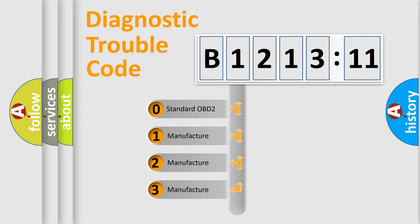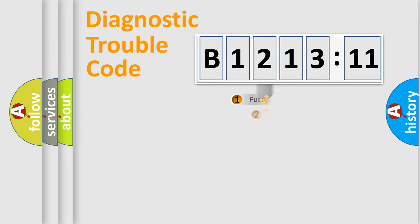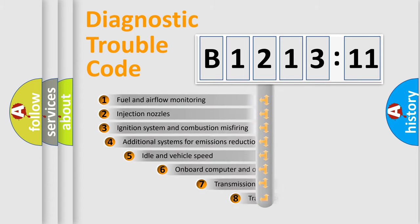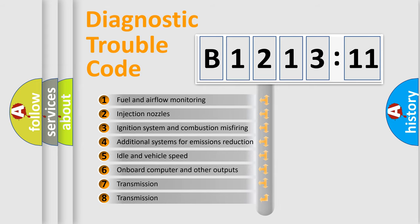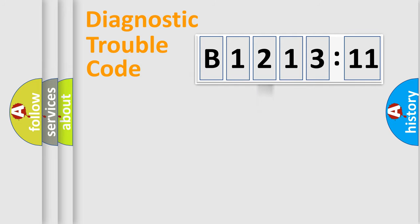If the second character is expressed as 0, it is a standardized error. In the case of numbers 1, 2, or 3, it is a more precise expression of the car-specific error. The third character specifies a subset of errors.